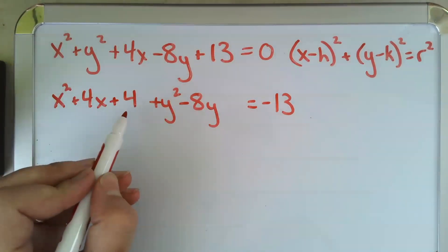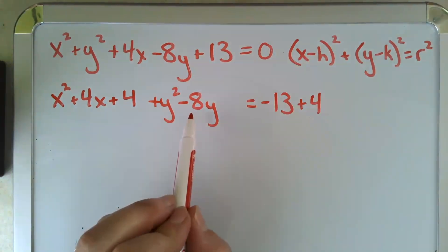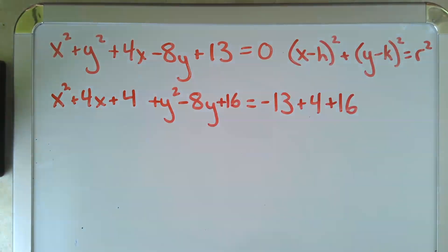And whatever we add to this side, we add to this side because we have to keep our equation balanced. Negative 8 in half is negative 4. 4 squared is positive 16. And whatever we add to this side, we add to this side. All right.